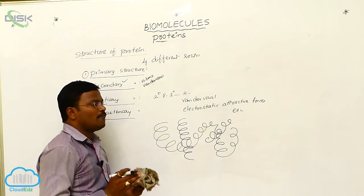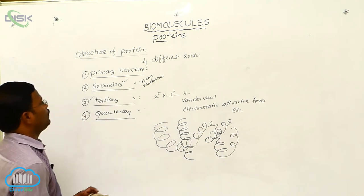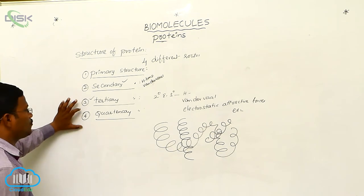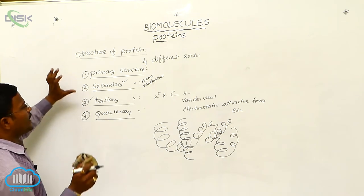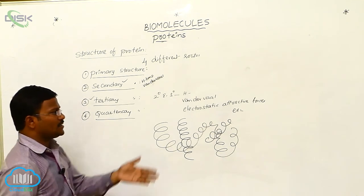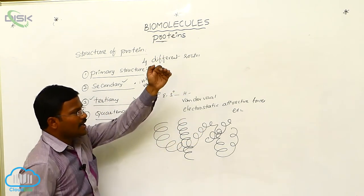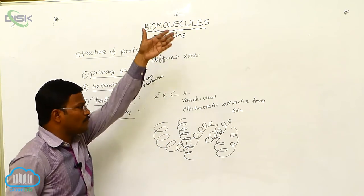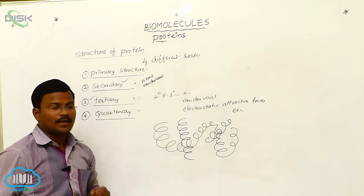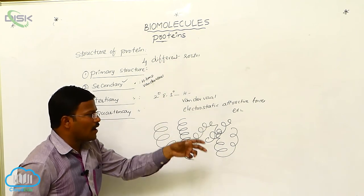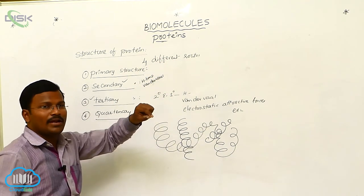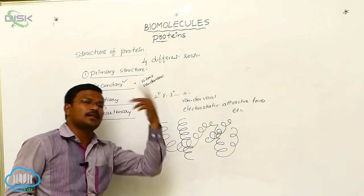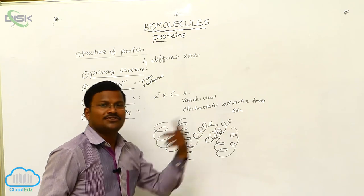The structure or shape of protein is explained in four different aspects: primary, secondary, tertiary, and quaternary structure. In simplified terms: primary structure means a thread-type arrangement where one amino acid is connected to another via a peptide bond, forming a long polypeptide chain. In the sequential order of amino acids, if any amino acid is substituted with another, the resulting protein also changes.